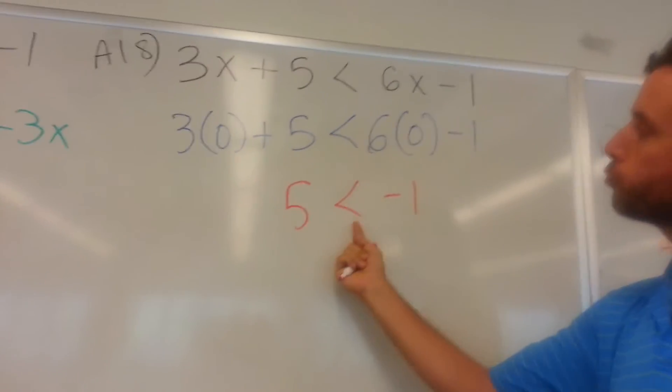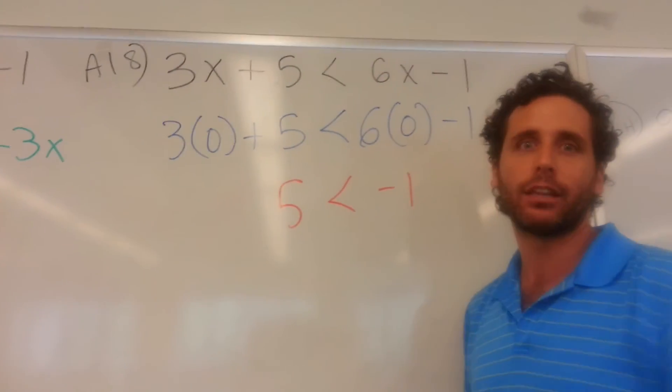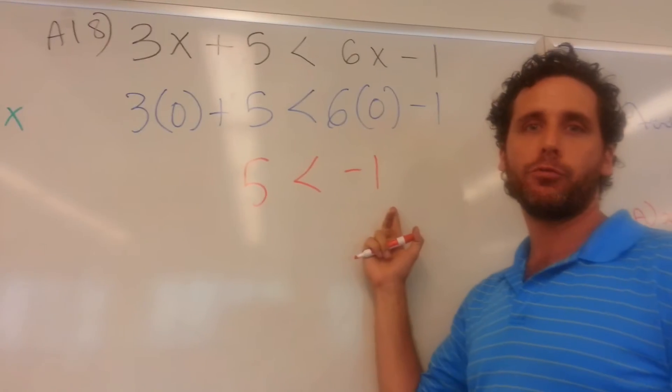And now you're going to try and visualize this as a mouse, where it's like an alligator. It's always going to eat the larger number. Here is five less than negative one.